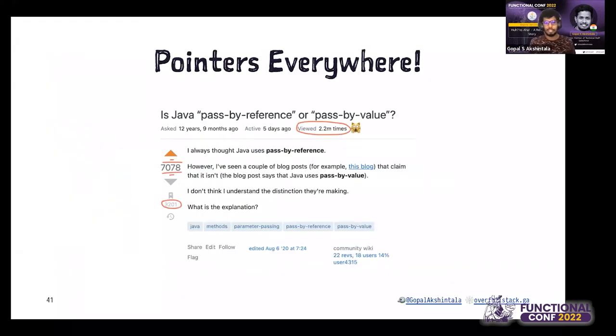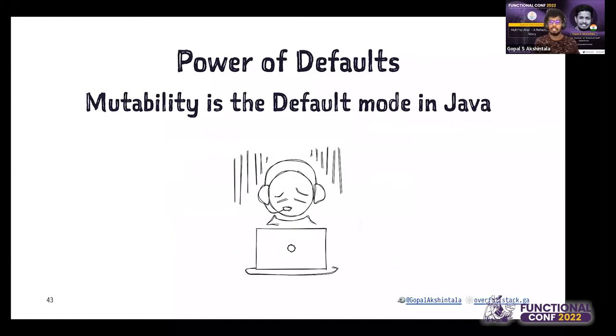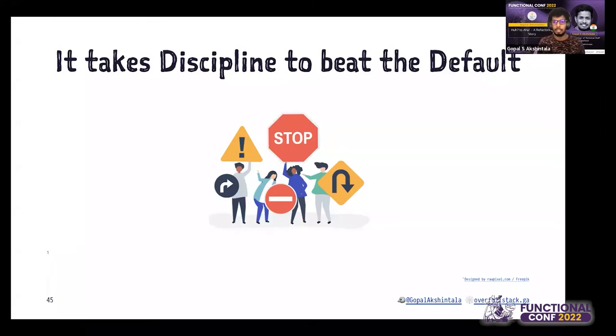It's also the problem with pointers in Java. Pass by reference versus pass by value is a very common and popular question. I myself got bitten by it a lot of times. Whenever you pass a mutable reference, anybody can do anything on it. Why is mutability predominant in Java code? Because of the power of defaults—mutability is the default mode in Java. Make immutability your default, but that's not easy. Just like any other things in life, we need to adhere to discipline to get the default.